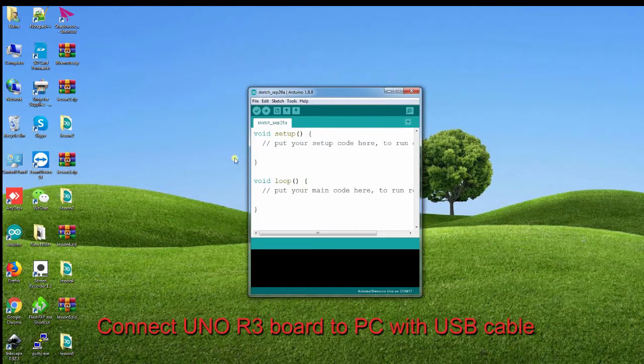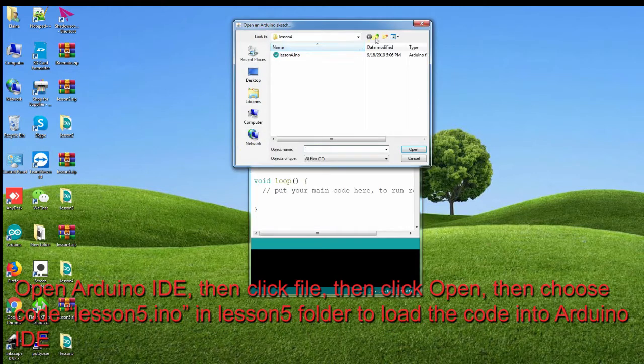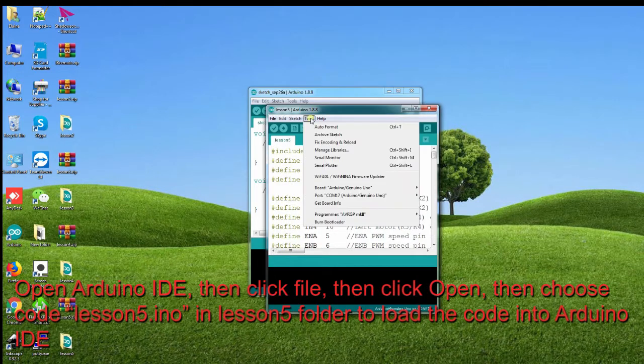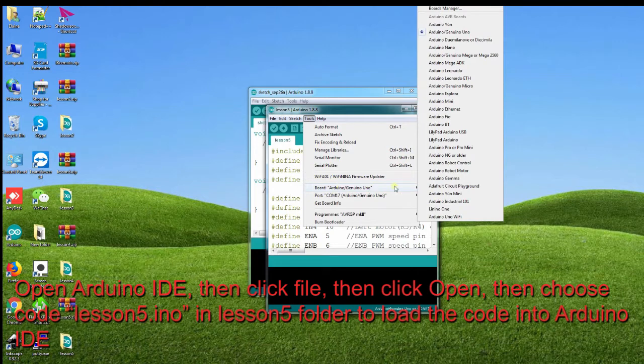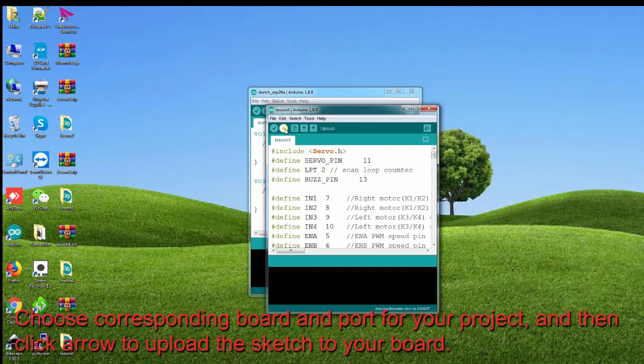Connect the Arduino R3 board to PC with USB cable, open Arduino IDE, then click File, then click Open, then choose code Lesson5.ino in Lesson5 folder to load the code into Arduino IDE. Choose the corresponding board and port for your project, and then click arrow to upload the sketch to your board.